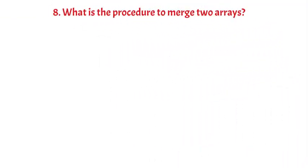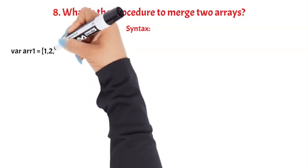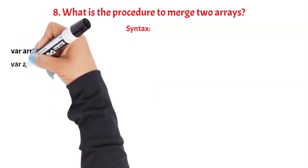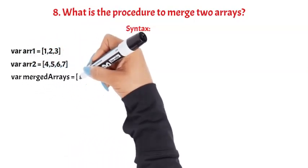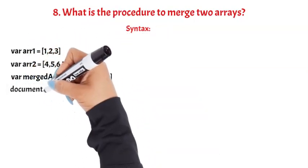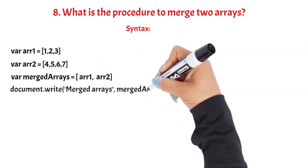What is the procedure to merge two arrays? Syntax: var r1 = [1, 2, 3]; var r2 = [4, 5, 6, 7]; var mergedArrays = [...r1, ...r2]; document.write(mergedArrays); Question 9.